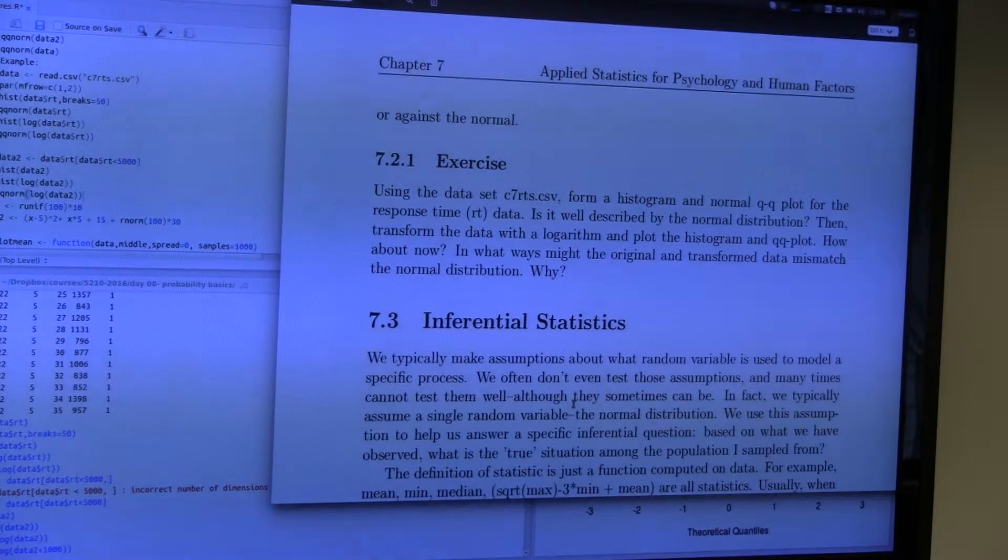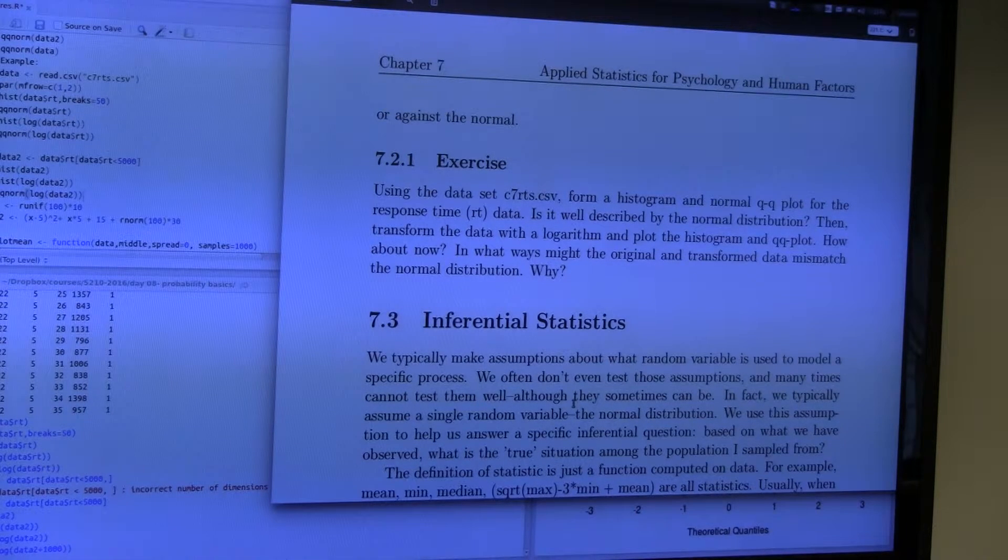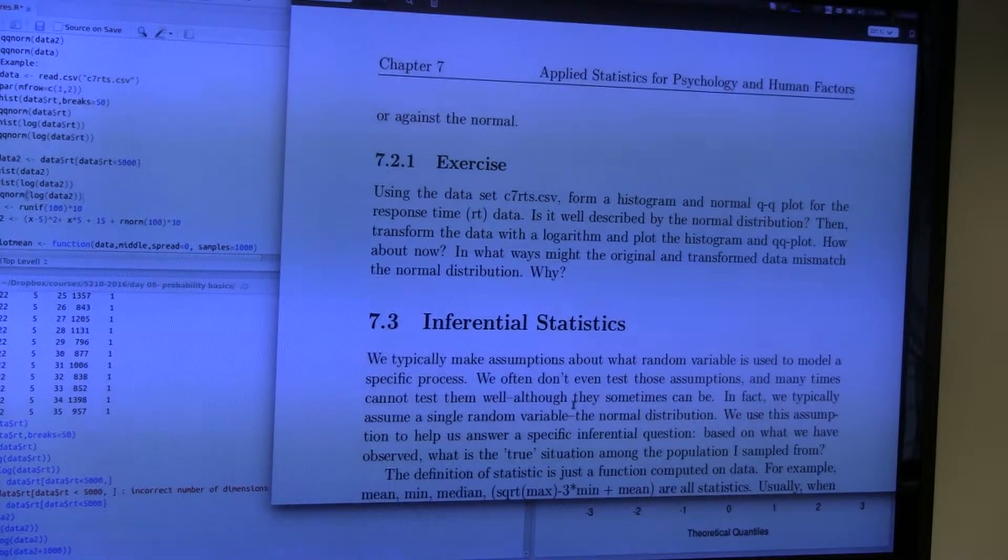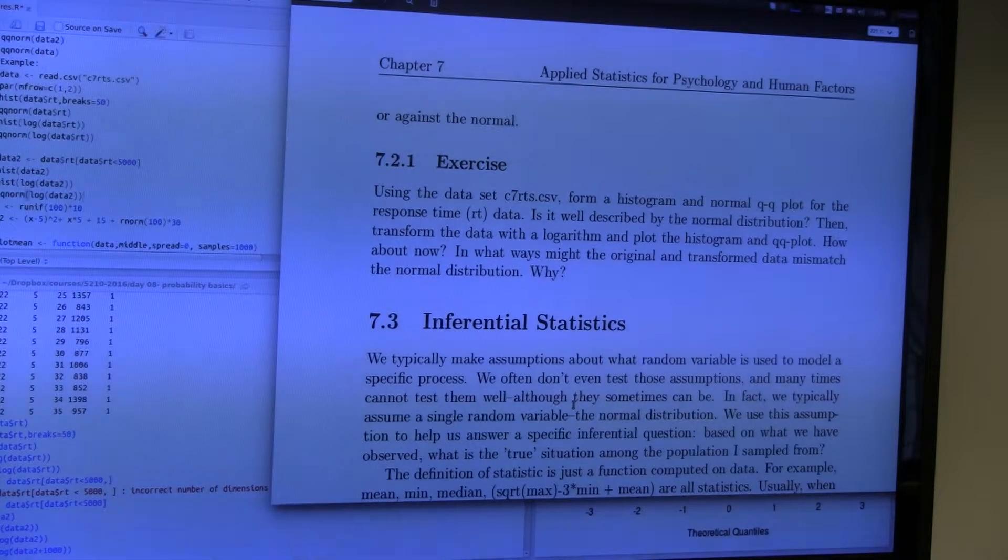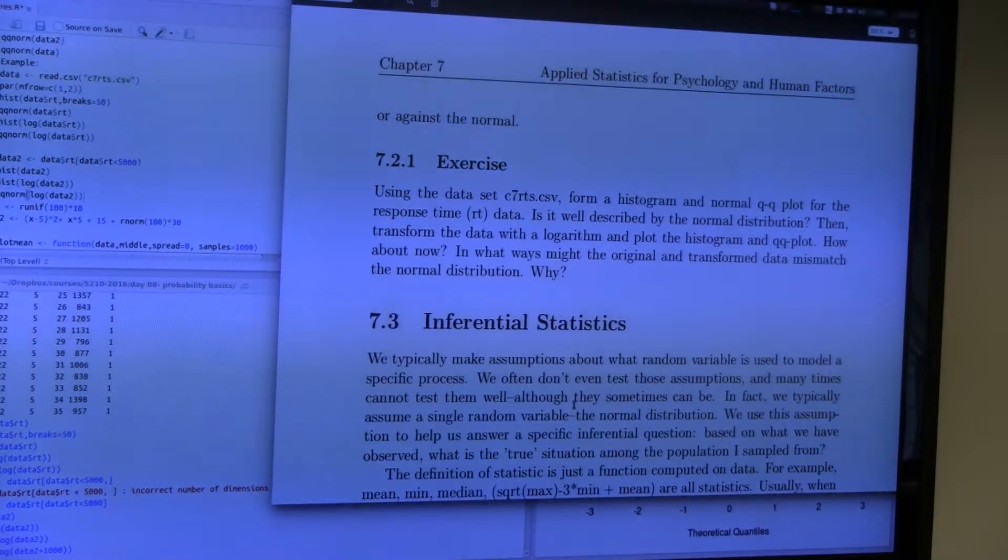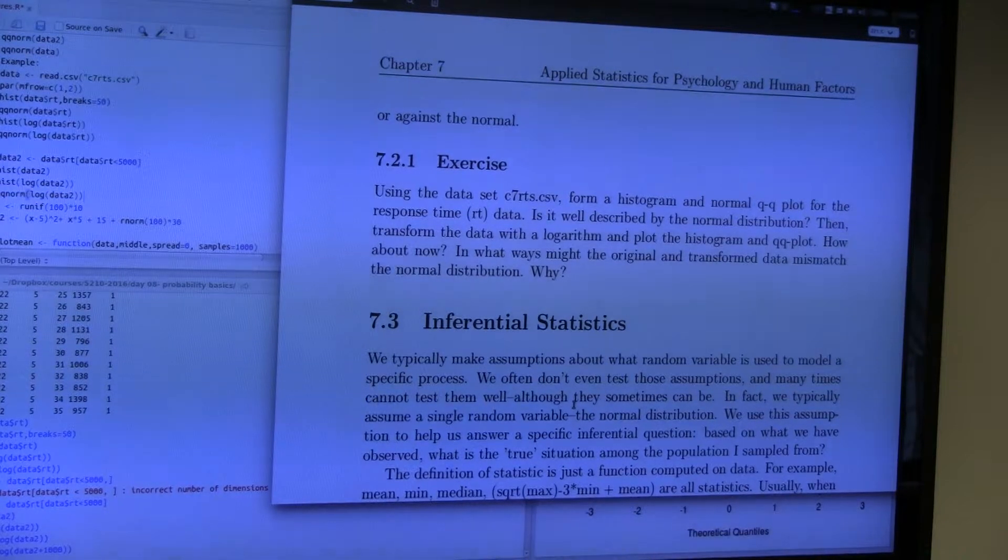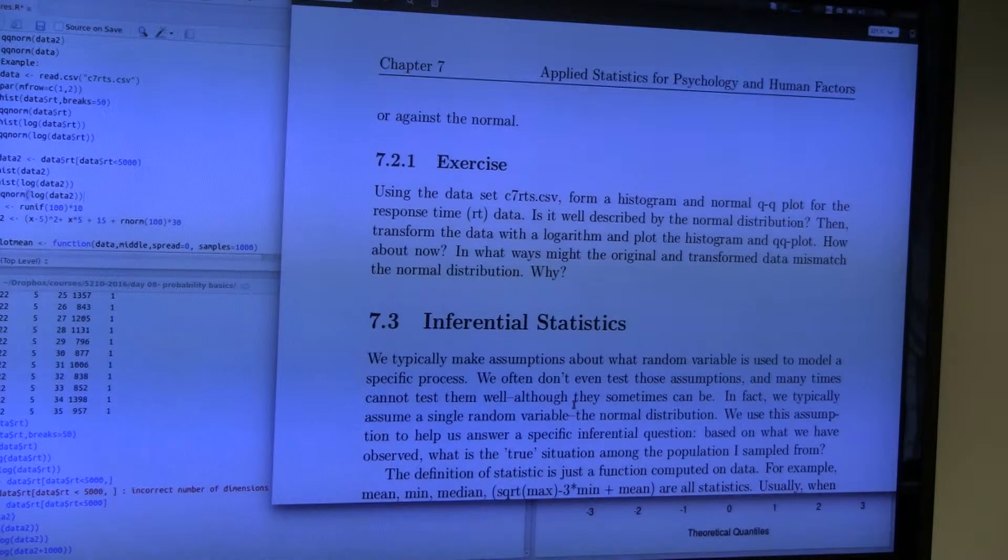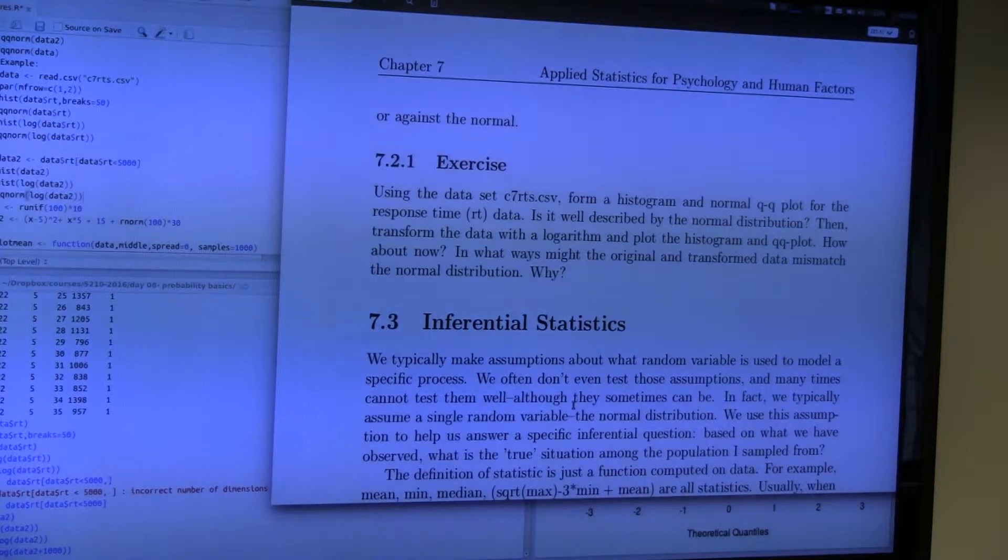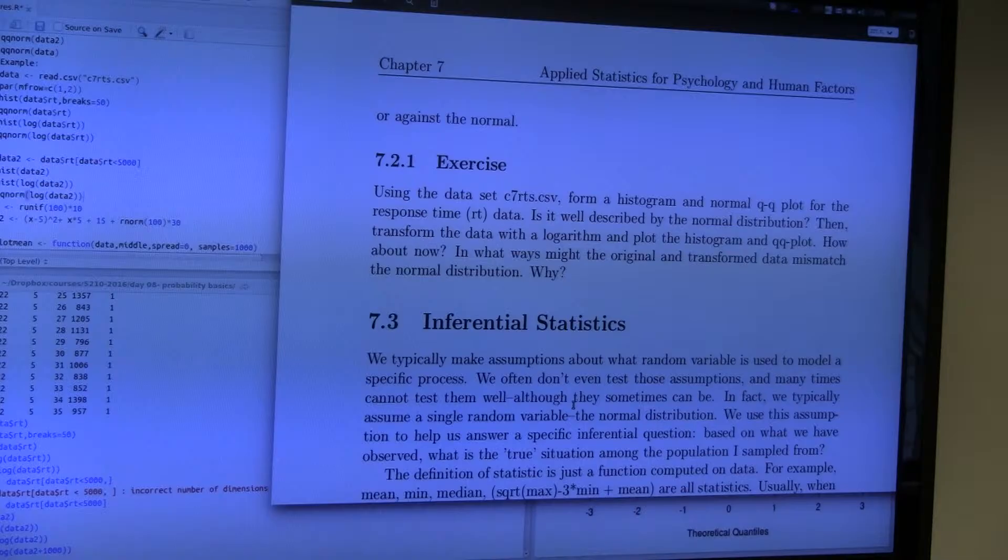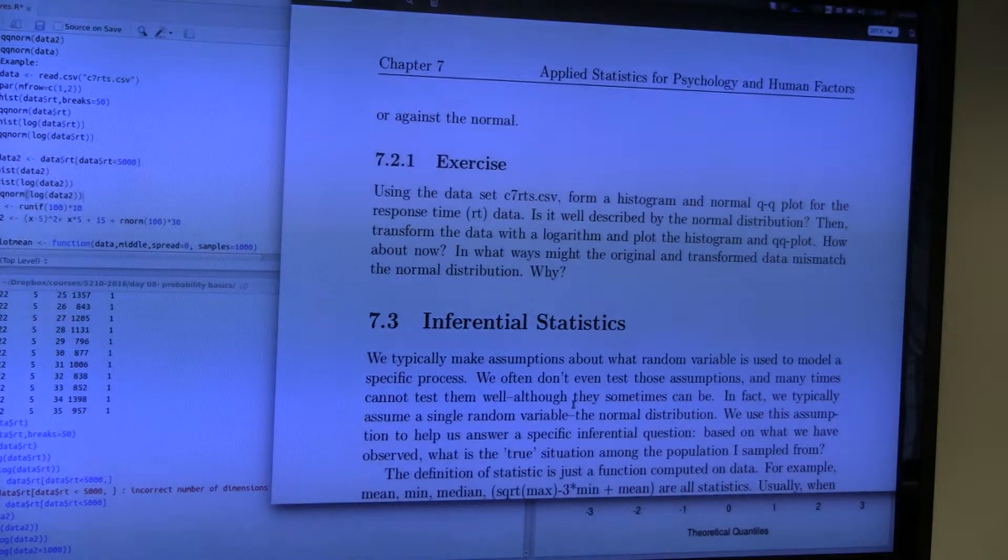So this is what we've looked at so far: distributions, and we've looked a little bit about our data. We've looked at how to understand distributions, how to generate random values from our distributions. But what we often want to do is what people say, run the statistics on the data. What they mean is do inferential statistics.